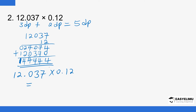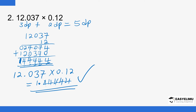Now by inspection, where should the decimal point be so that we have five decimal places? Count five digits from the right: 1, 2, 3, 4, 5 — the decimal point should be between 1 and 4. So the answer is 1.44474. That is how you go about it — take note of the required number of decimal places and how we get it.